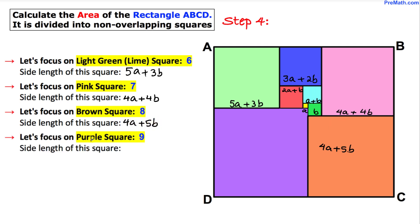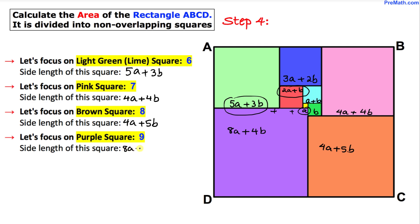Finally let's focus on this purple square. The side length is going to be the length of the lime green square plus the red square plus the yellow square. If we add all three we get 8a plus 4b. So the side length of this purple square is 8a plus 4b.